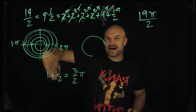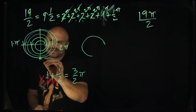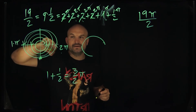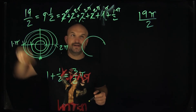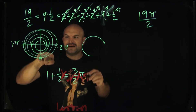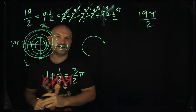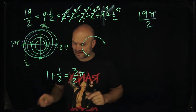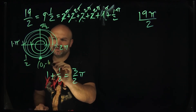What remains is 1 plus one-half, which equals three-halves. So 19π/2 simplifies to 3π/2 after all the full revolutions. Hopefully you recognize that 3π/2 is represented by the coordinate point (0, −1) on the unit circle — we went around four full times (4 × 2π), then one π, then a half π.